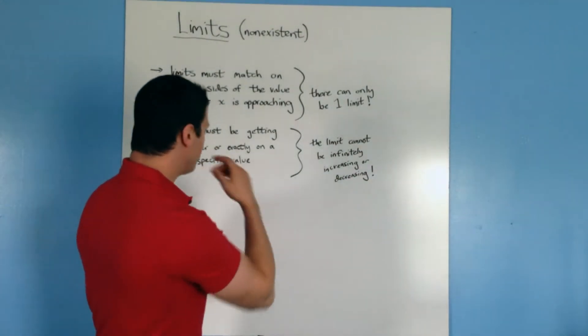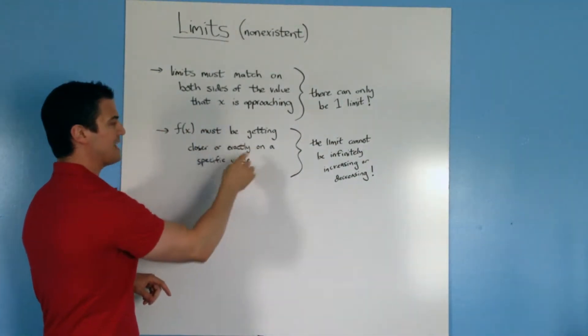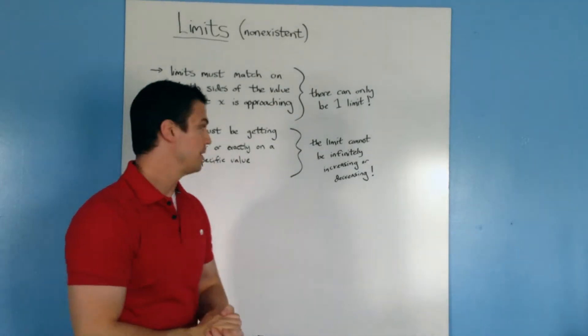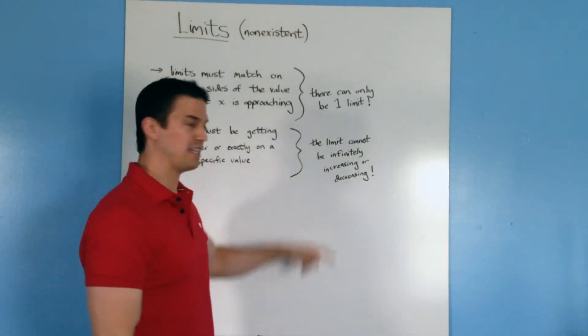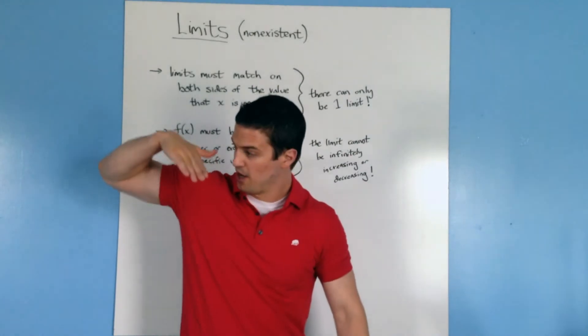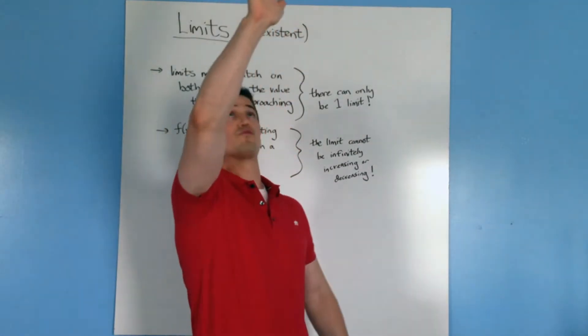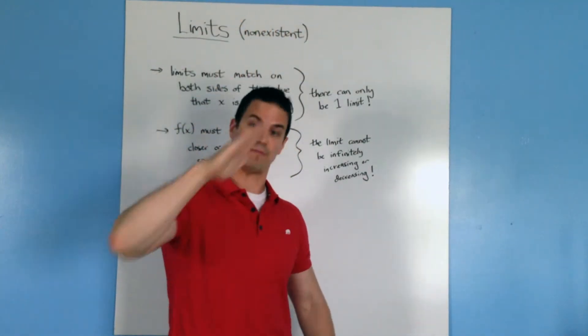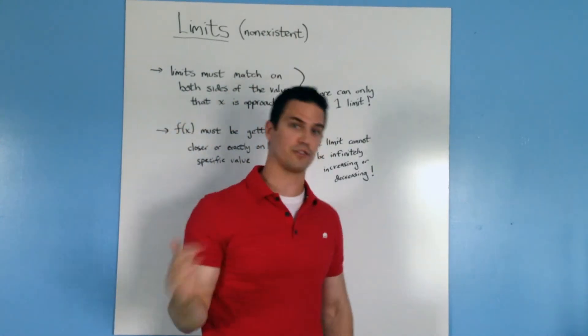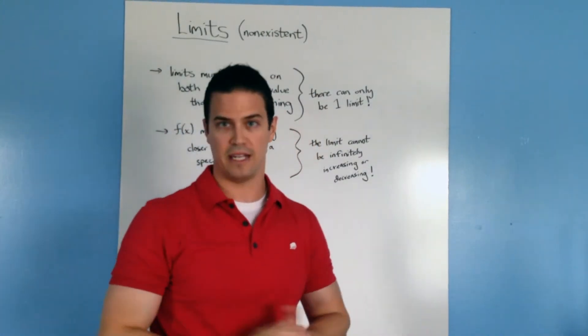Second thing, f of x must be getting closer or exactly on a specific value, meaning the limit cannot be infinitely increasing or decreasing. So if you have a graph that's just going straight up, basically it looks like it's going straight up or it looks like it's going straight down, then it can't have a limit in that case.